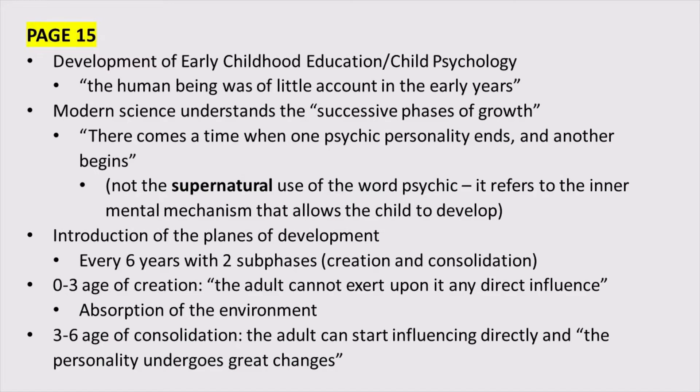She compared the child's development and the absorbent mind to a sponge, saying that if you put a sponge in clean water it's going to absorb everything — all the clean water. But if you put it in dirty water, it's going to absorb the clean and dirty water together. It doesn't have a filter. That's exactly what she talks about when she says you can't exert direct influence on the child during that zero-to-three age group — they just absorb everything.